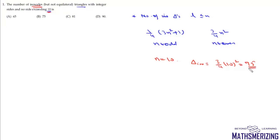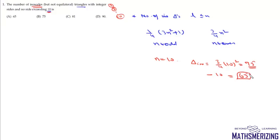We need isosceles but not equilateral triangles, so we subtract all equilateral cases. Equilateral triangles can have side length 1, 2, ... up to 10, giving 10 cases. So 75 − 10 = 65 total triangles that are isosceles but not equilateral. That's option A.